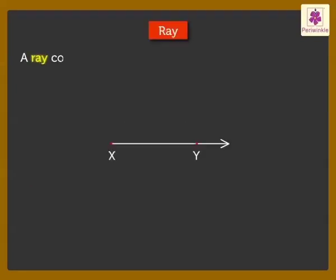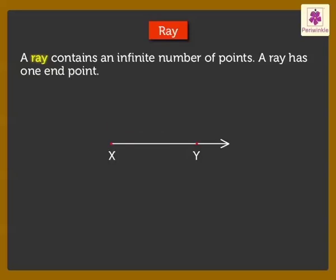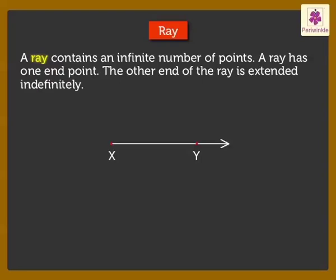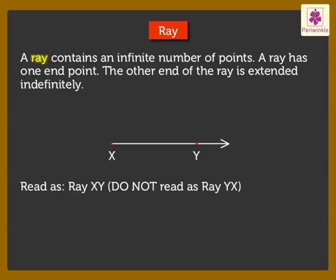Next is ray. A ray contains an infinite number of points. A ray has one end point. The other end of the ray is extended indefinitely. This ray can be read only as ray XY, as we always start from the end point. Do not read it as ray YX. This ray can be read as ray AB or ray AC.